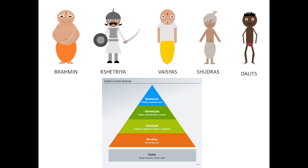Brahmins hold the top position — they are the priestly classes. Kshatriyas hold the second position and are known as rulers, warriors, and administrators. Vaishyas are artisans, trade persons, farmers, and merchants. Shudras are manual laborers, whereas Dalits are street cleaners and do menial tasks.